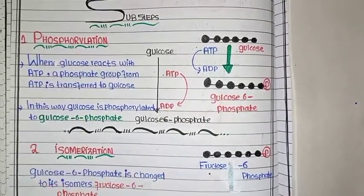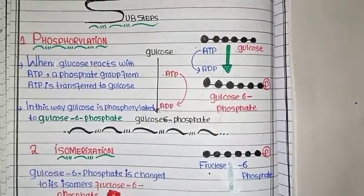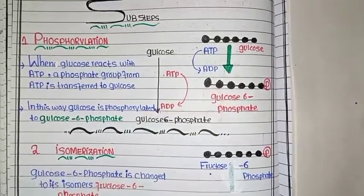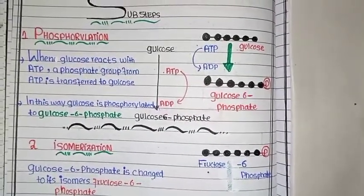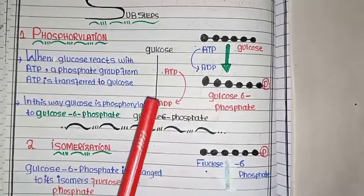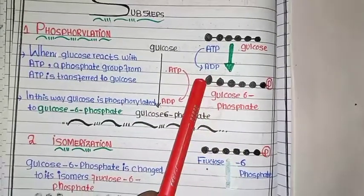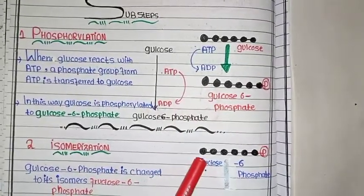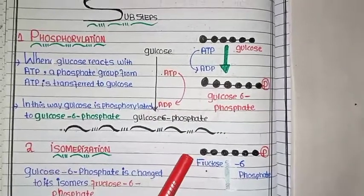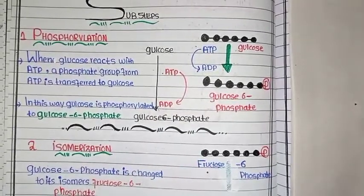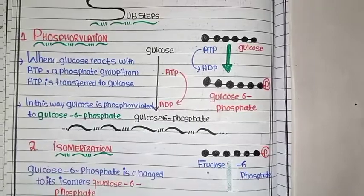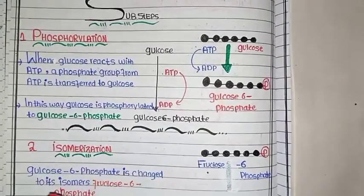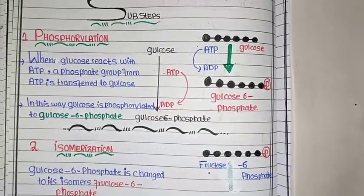In isomerization, glucose-6-phosphate is converted into its isomer fructose-6-phosphate. The reason for this conversion is that glucose phosphate cannot attach two phosphate groups at once, so it first converts to fructose-6-phosphate. In the second step — isomerization — glucose-6-phosphate changes into fructose-6-phosphate.